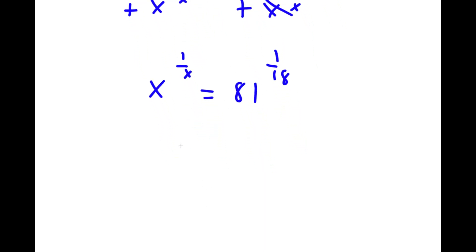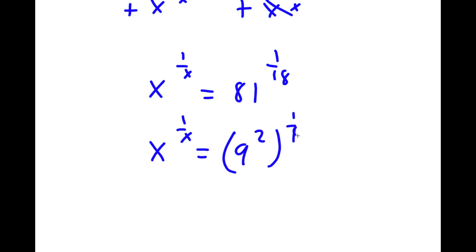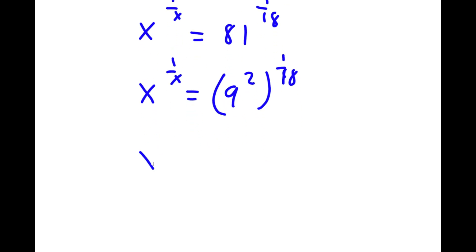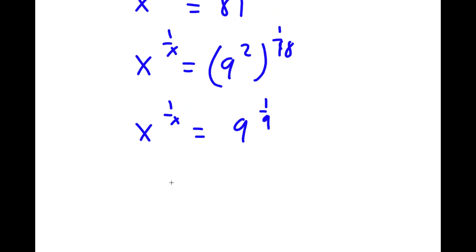Now 81 is the same thing as 9 squared. So now I have x to the power of 1 over x is equal to 9 squared to the power of 1 over 18. 2 times 1 over 18 is 1 over 9. So I have x to the power of 1 over x is equal to 9 to the power of 1 over 9, meaning x is equal to 9.